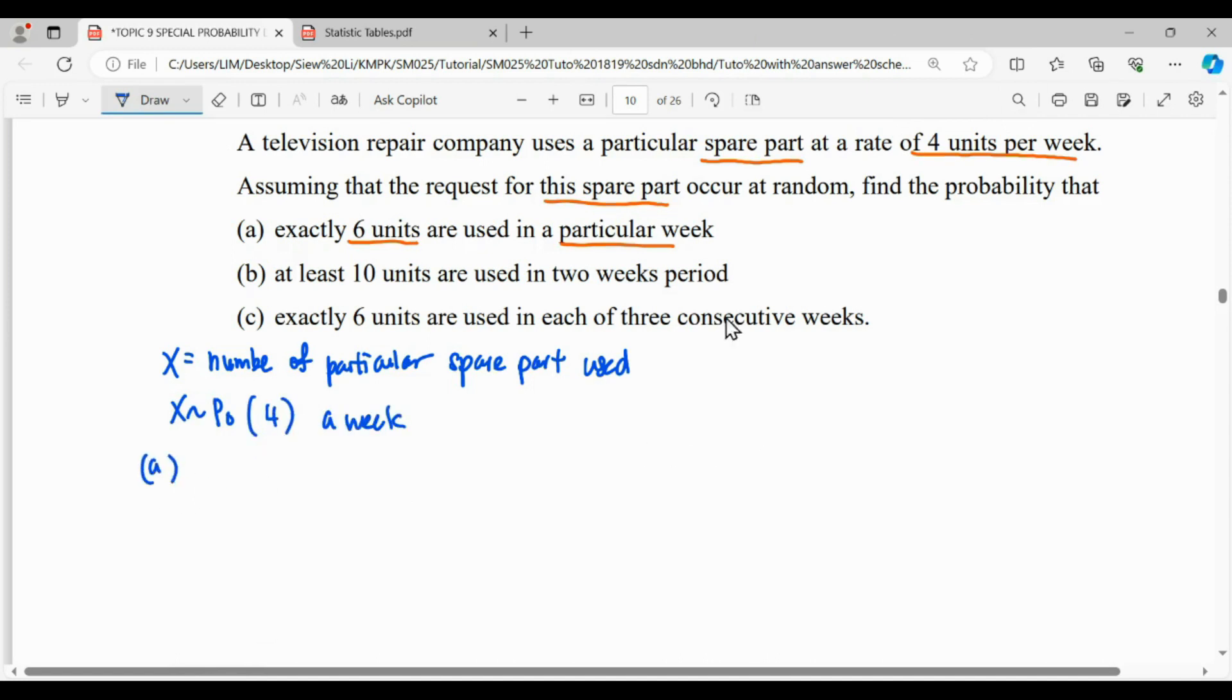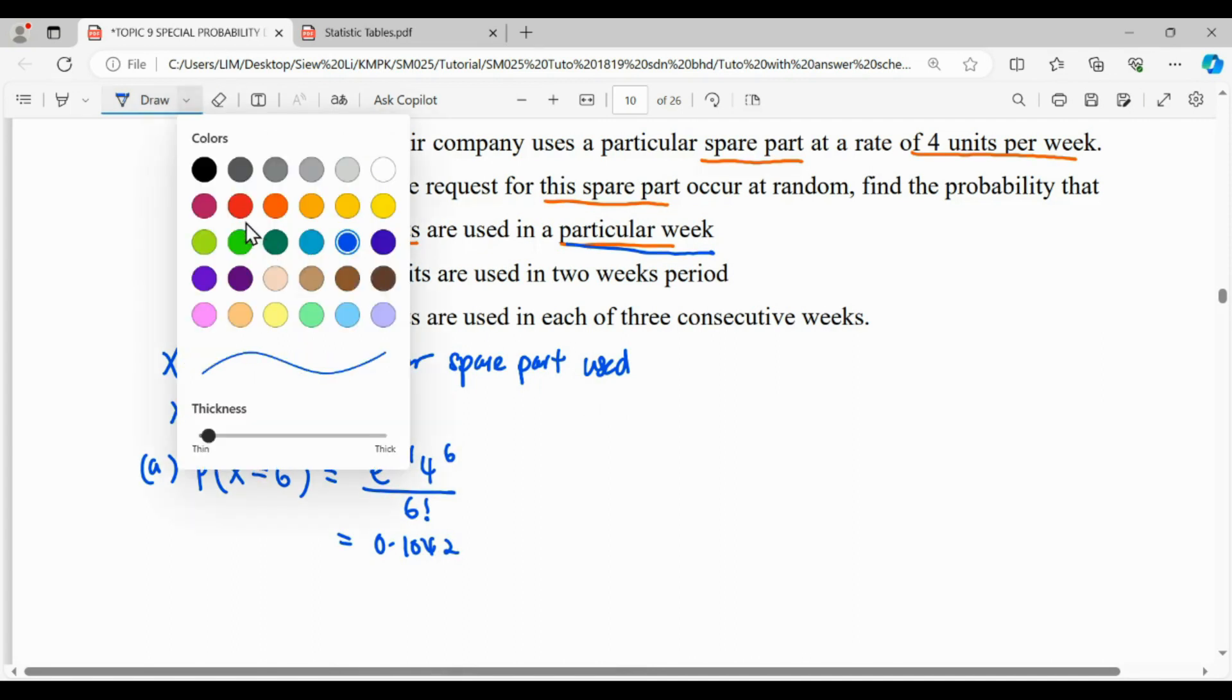So for question A, they want a particular week, so the time frame is the same. They want exactly 6. So the probability that the number of spare parts exactly equals 6. For this question, when we have equal, we can use the formula of Poisson: e^(-λ) times λ^6 over 6 factorial, where λ = 4.